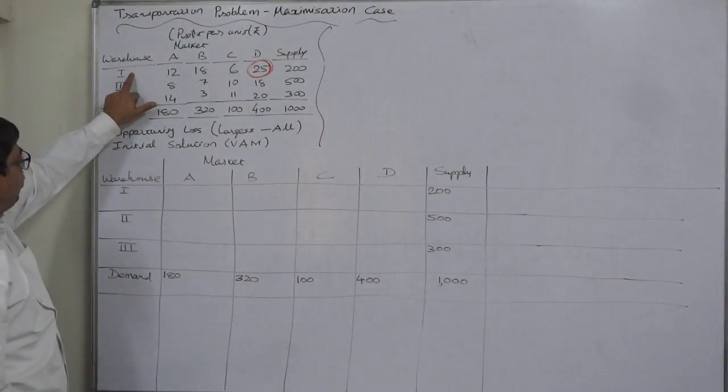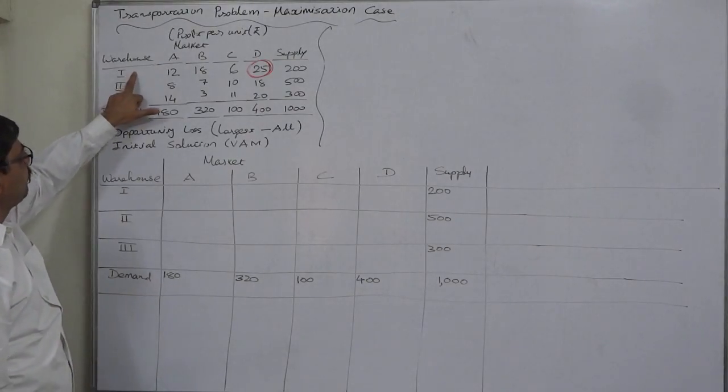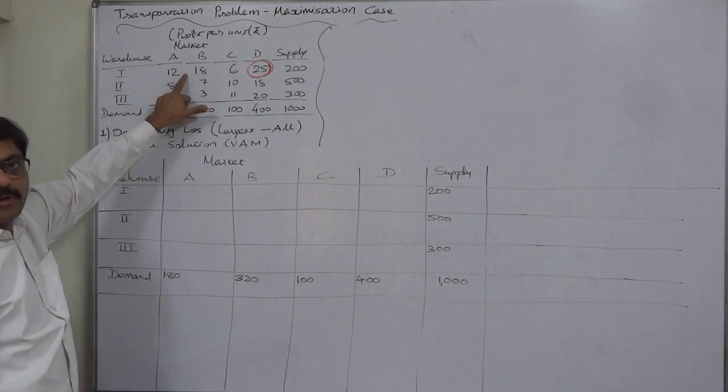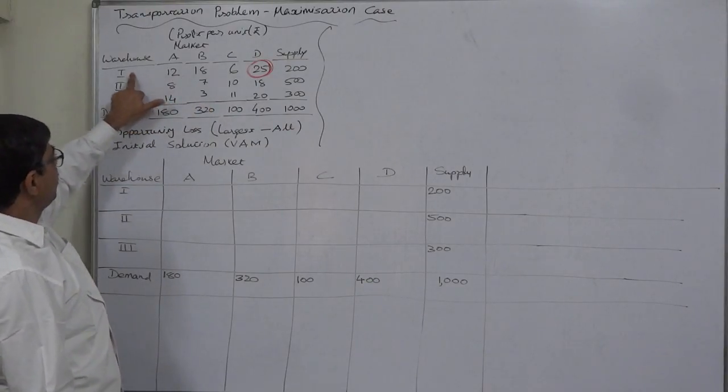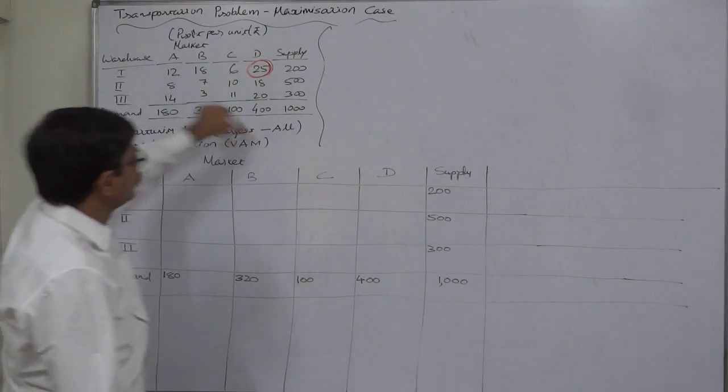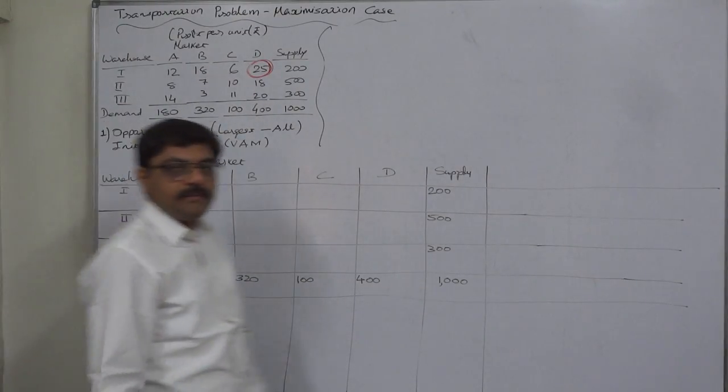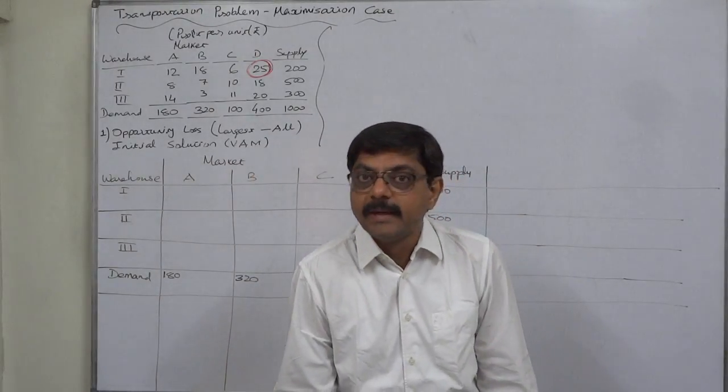That means if we sell one unit from warehouse one to market A, the profit will be rupees 12 per unit. If we sell one unit from warehouse one to market B, the profit will be rupees 18 per unit, and so on. Now the problem is, transportation problems basically deal with minimization cases.